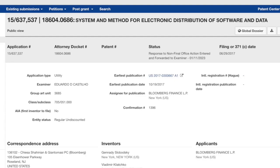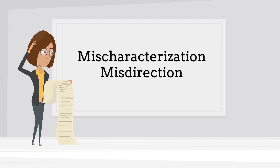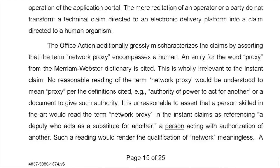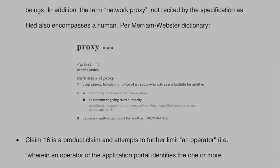The first one is application 15,637,537. At first this one appears to be very similar to what we talked about last time — broadest reasonable interpretation. The applicant argues the office action grossly mischaracterizes the claims by asserting that the term 'network proxy' encompasses a human being. The applicant points out that an entry for the word 'proxy' from the Merriam-Webster dictionary is cited. The examiner used the broadest reasonable interpretation rule and said some kinds of proxies are human, therefore a network proxy is human.